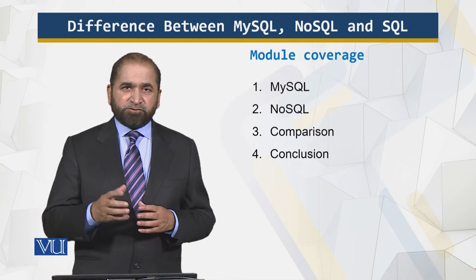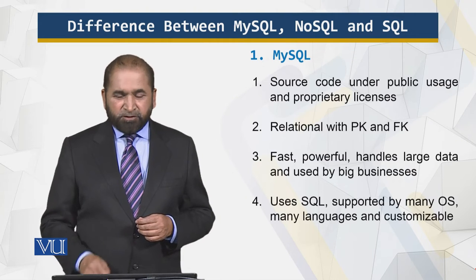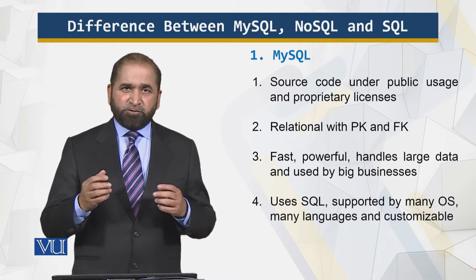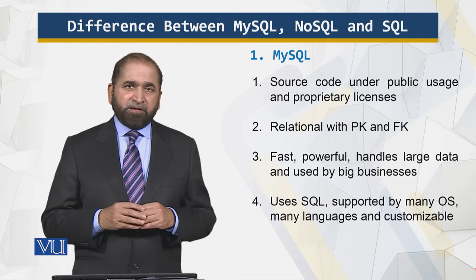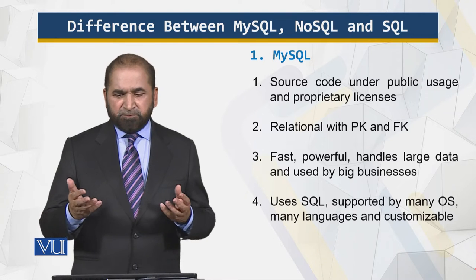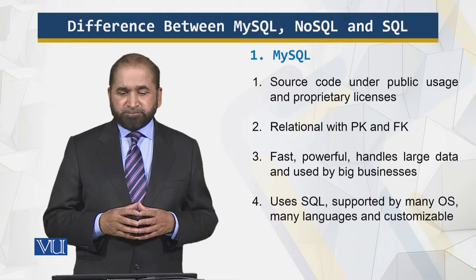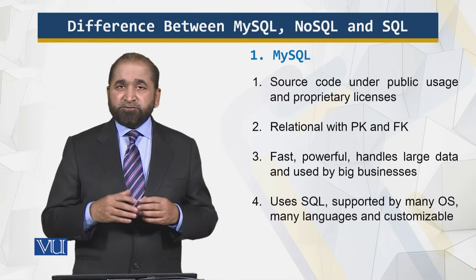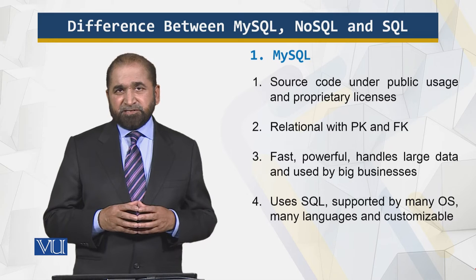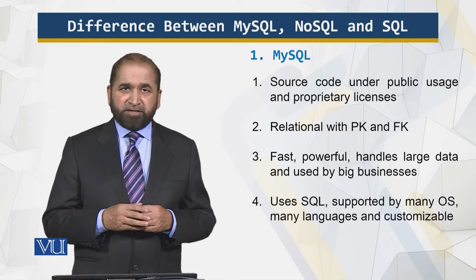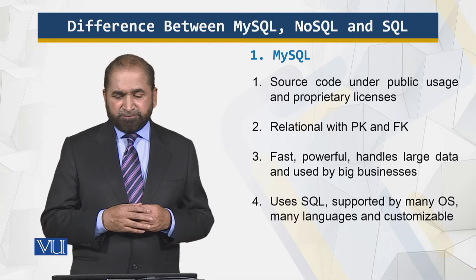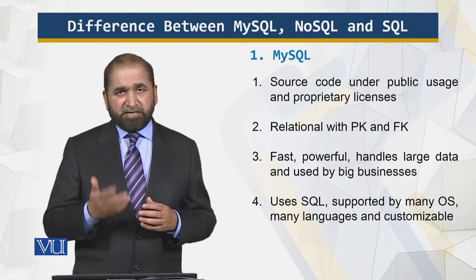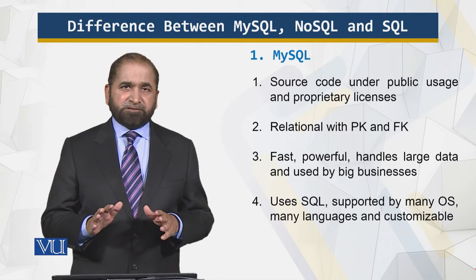MySQL is a relational database system — it supports the relational model and is available under both public domain and proprietary licenses. Relational means it has primary keys and foreign keys and defines how tables are linked together. It is fast, powerful, used by large organizations, uses SQL, is supported by many operating systems, and supports connections via standard programming languages.